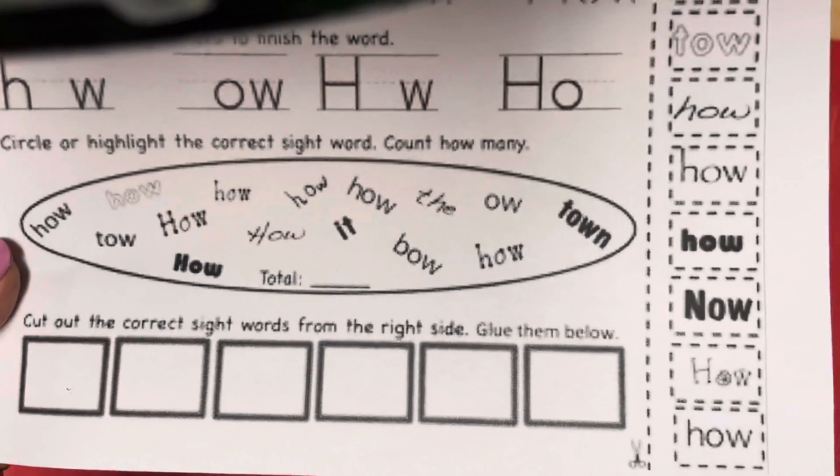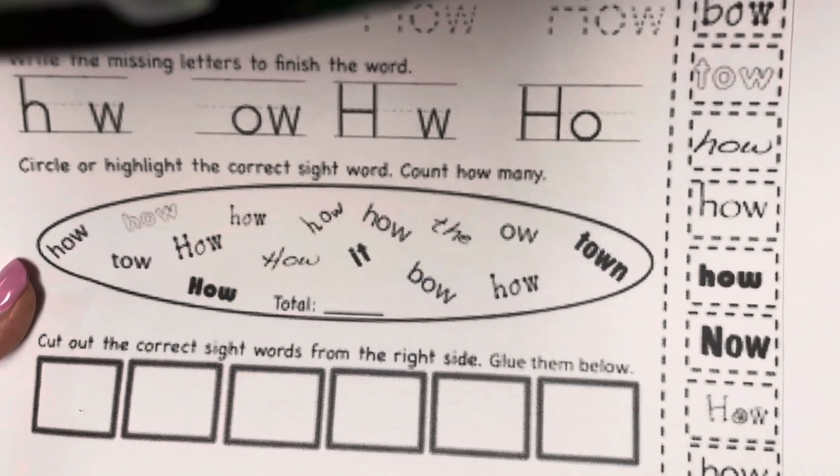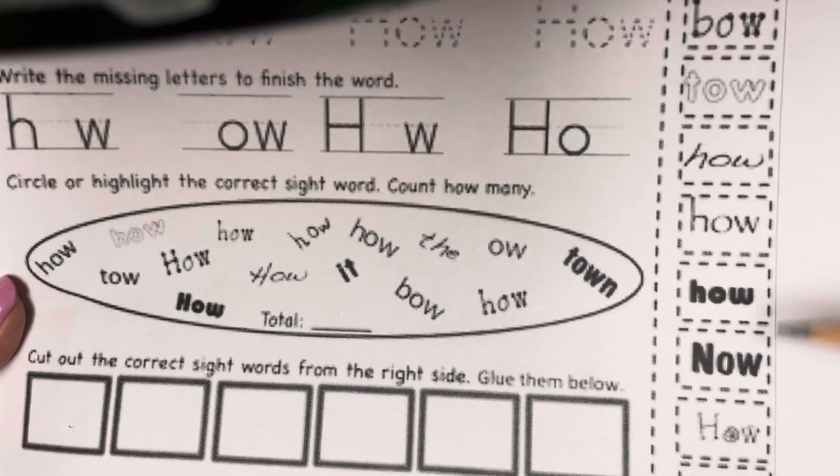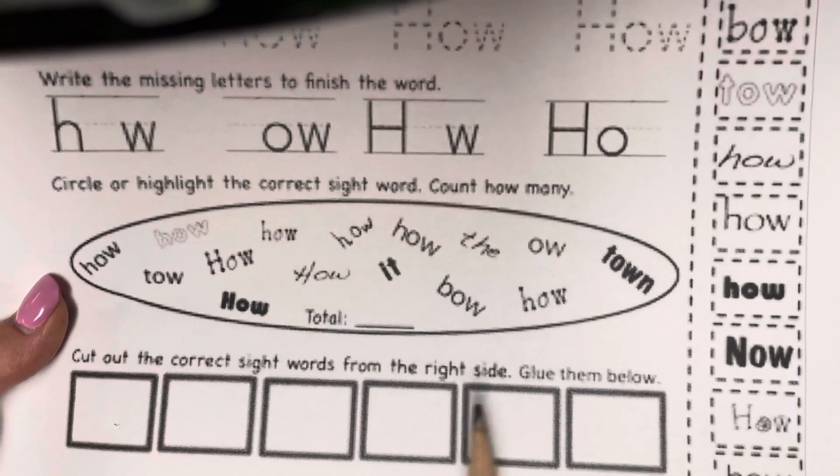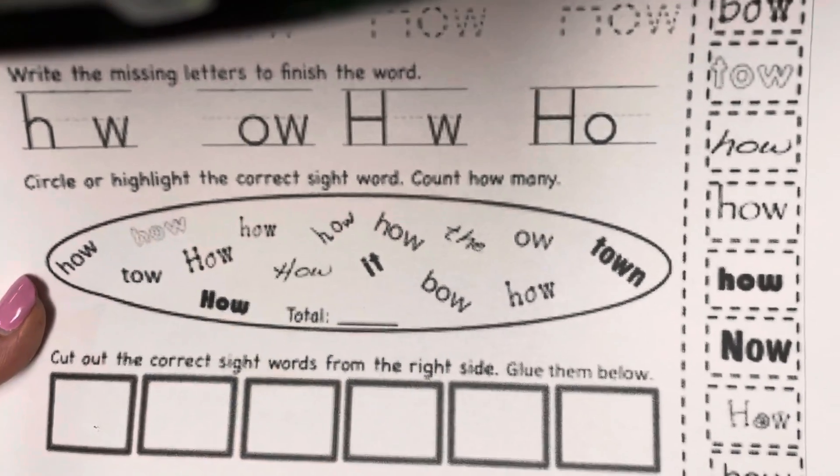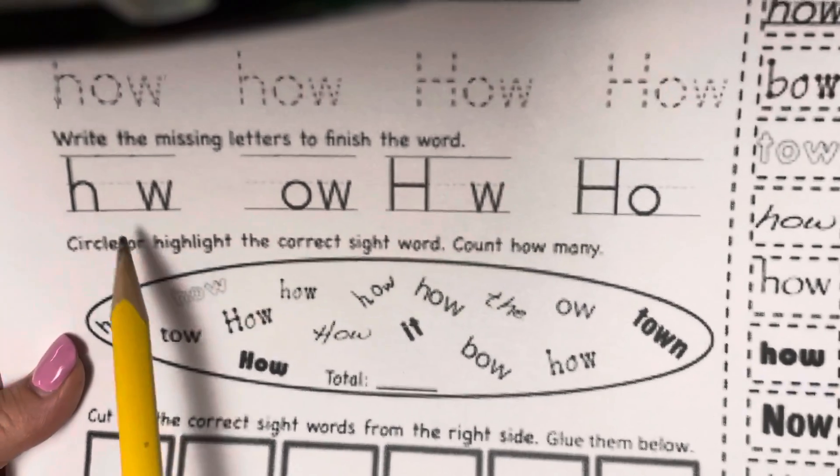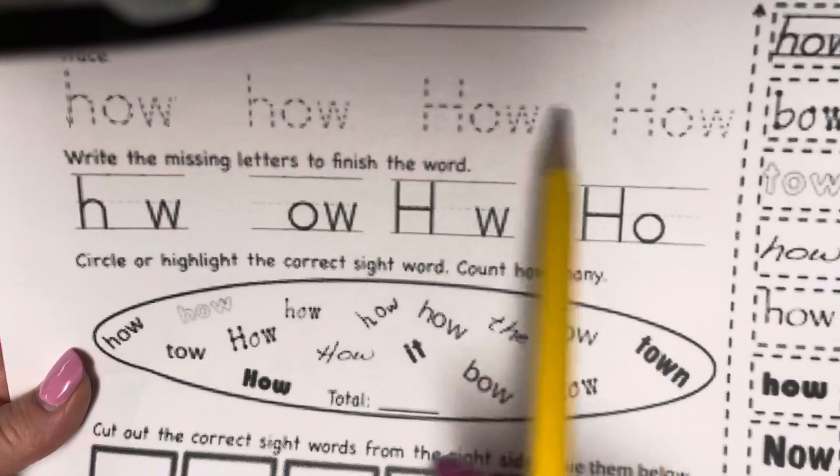And you guys can do it in any order if you'd like. All right. So make sure you cut out all the hows. You should have six hows and glue them down here. And then circle all the hows. And then write the total there. And make sure you fill in the missing letters. And then trace.